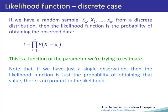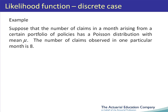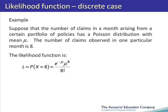Let's look at an example. Suppose that the number of claims in a month from a certain portfolio has a Poisson distribution with mean mu. Suppose the number of claims observed in one particular month is 8. In this case, the likelihood function is the probability that X equals 8, which is e to the minus mu times mu to the power of 8, divided by 8 factorial.